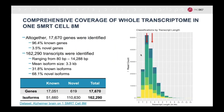Here is an example from an Alzheimer's brain dataset sequenced on the Sequel II system using one SMRT cell 8M. Altogether, 17,000 genes were identified, out of which 96% were known genes and 3.5% were completely novel. On the transcript isoform level, over 162,000 transcripts were identified, ranging from 80 bases to over 14 KB.